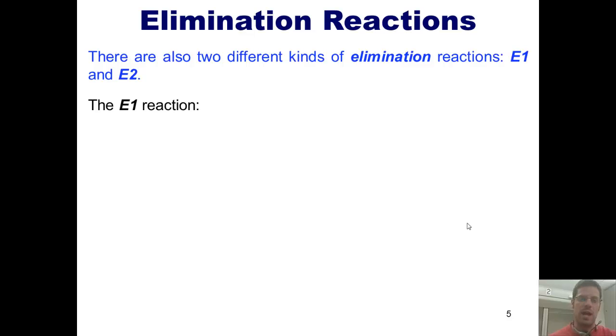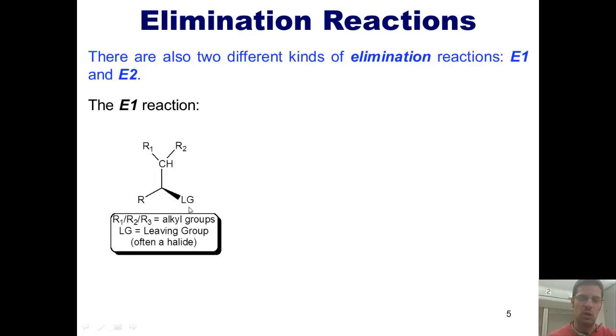Here's the mechanism for the E1 reaction. What occurs is you have some type of material that has a leaving group, which I've marked LG here. It's typically a group that is stable, holding a negative charge, often a halogen, like bromine, chlorine, or iodine. What occurs is the leaving group takes off and gives me a carbocation intermediate. This is the slow or rate-determining step.